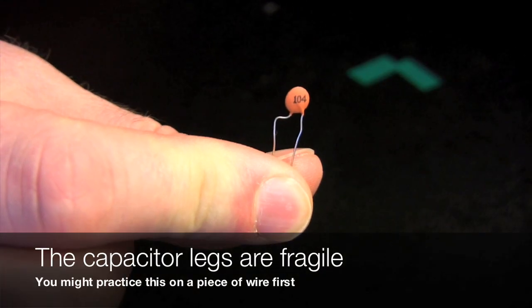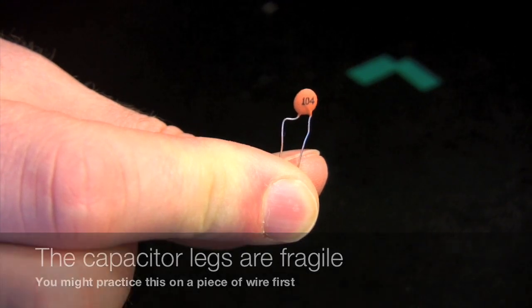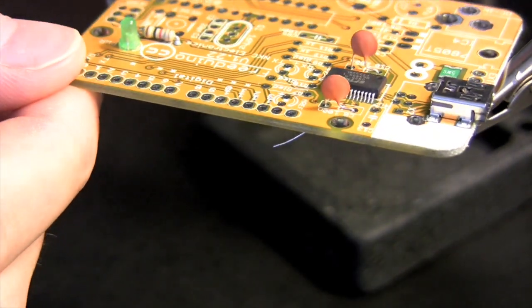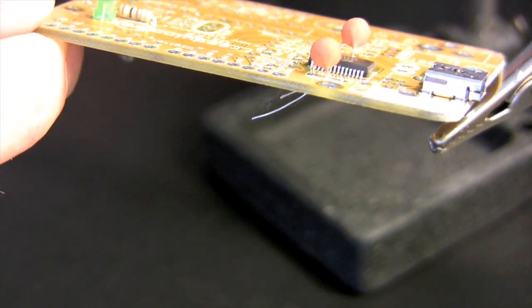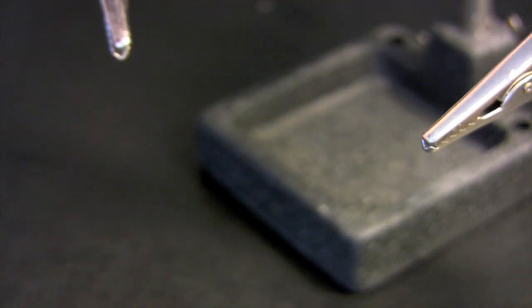I very carefully bent one leg of each of these capacitors into a Z around the end of my tweezers. This way I could position them very close to the surface of the PCB. Be careful when you do this. The capacitor legs are thin and fragile and you don't want to break them off of the component.